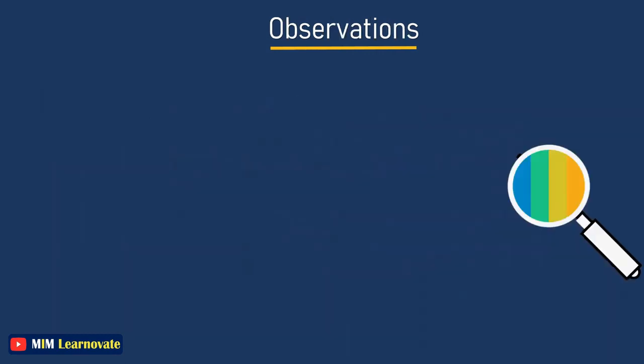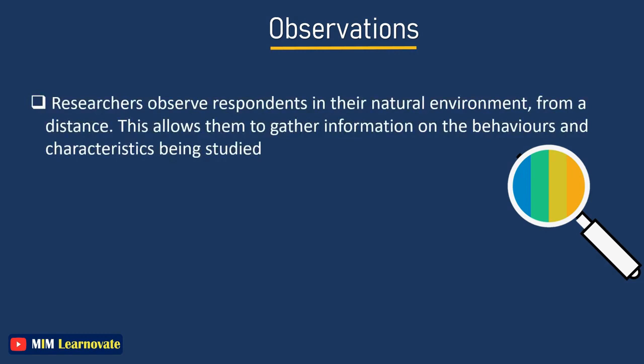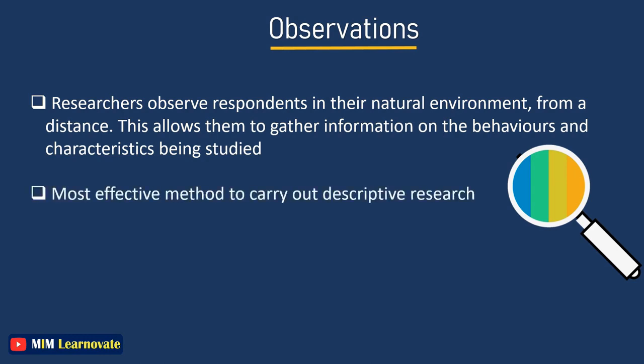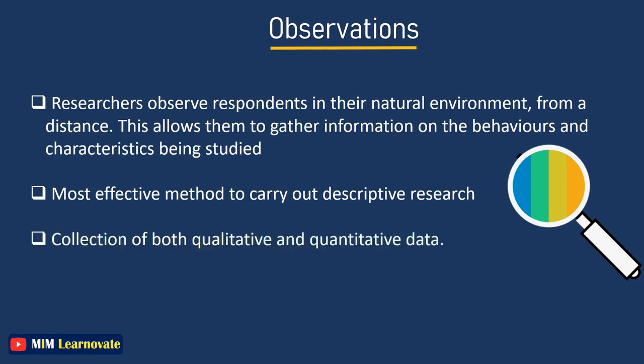In the observational method, researchers observe respondents in their natural environment from a distance and therefore do not influence the variables being studied. This allows them to gather information on behaviors and characteristics without relying on respondents for honest and accurate responses. The observational method is considered the most effective method to carry out descriptive research, involving the collection of both qualitative and quantitative data.